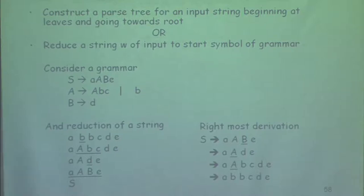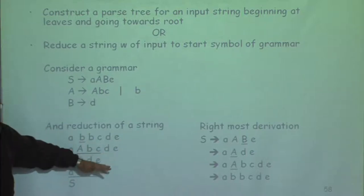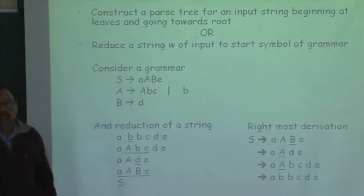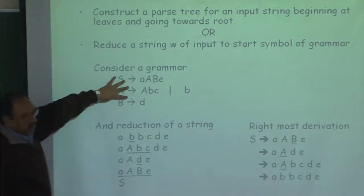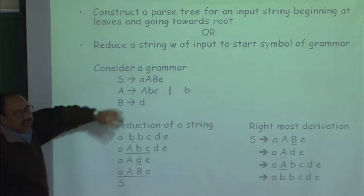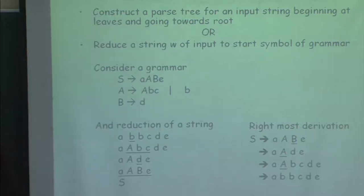I won't go into the proof that if you are building a bottom-up parser, the reduction has to be in the reverse of rightmost derivation — that is a result you will have to take for granted. But this information will somehow be captured when we start constructing the parser. Bottom-up parsers are really the reverse of rightmost derivation. These are also traditionally known as shift-reduce parsers.